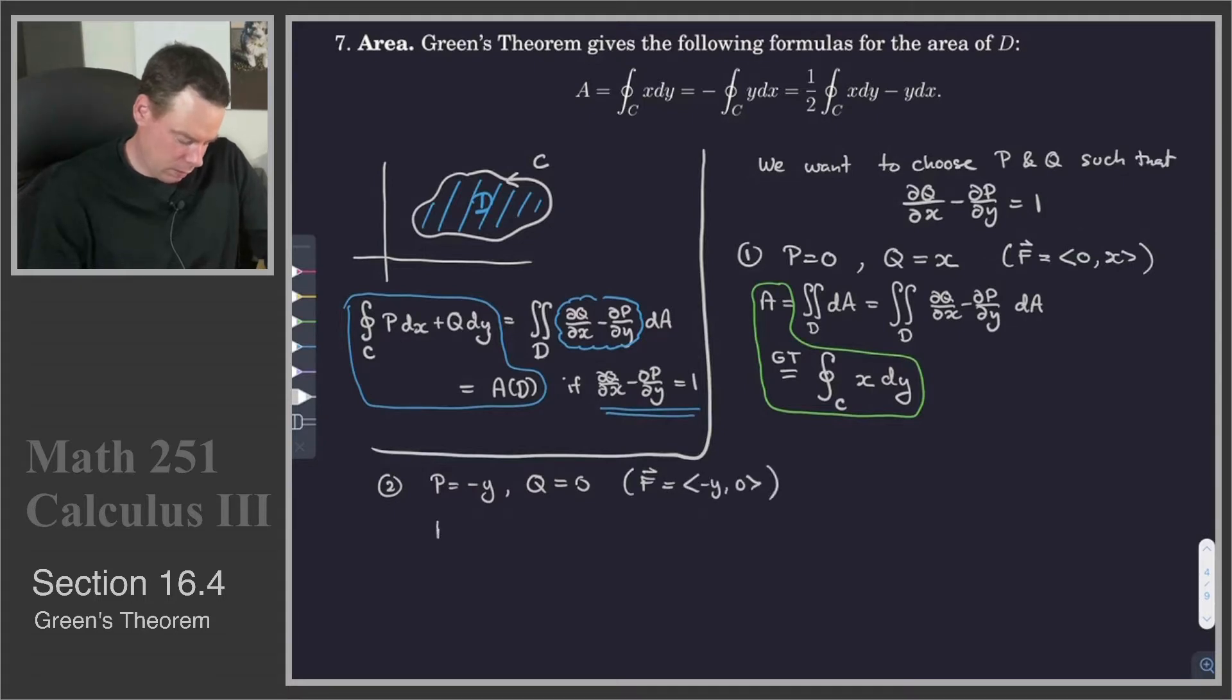In this case, the area is equal to the integral, or double integral over D, dA, which is the double integral over D of dQ/dx minus dP/dy dA.